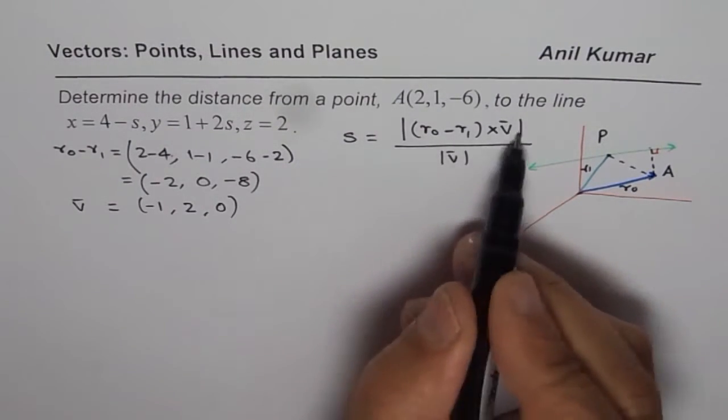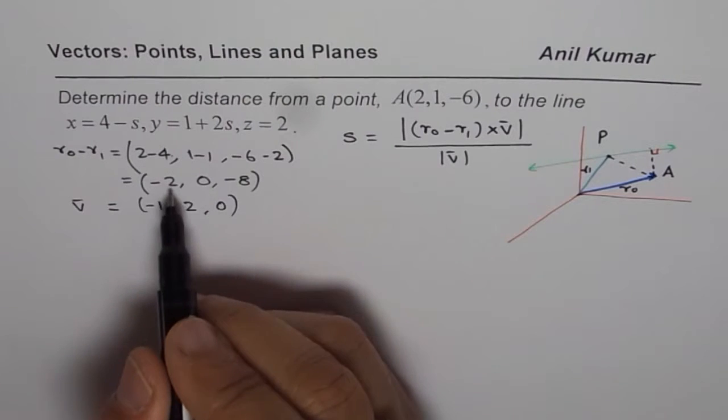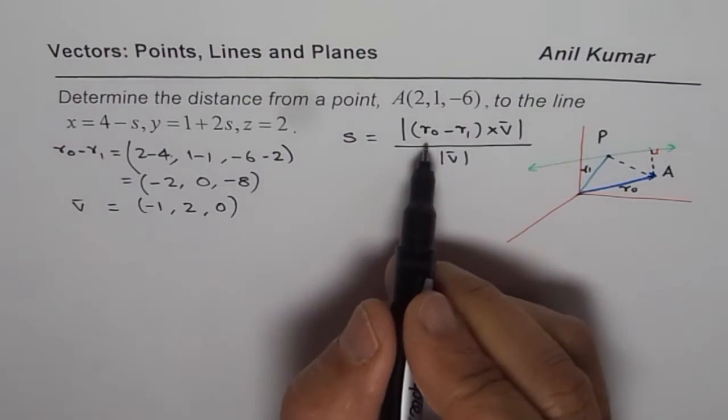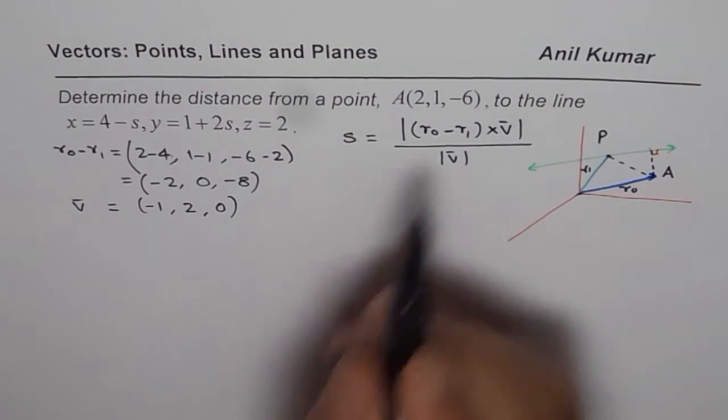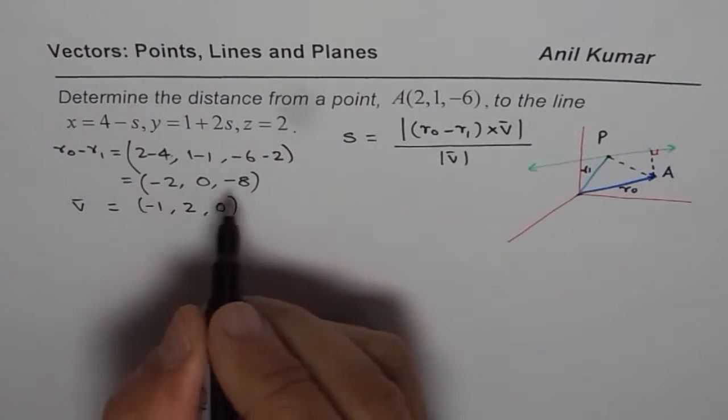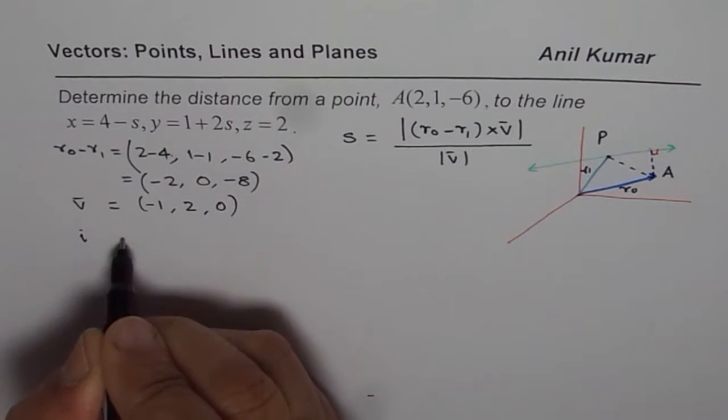Or let us first find the cross product between these two. So let us find the cross product between these two. So the cross product, rather the magnitude of the cross product. Cross product we can find like i, j, k.